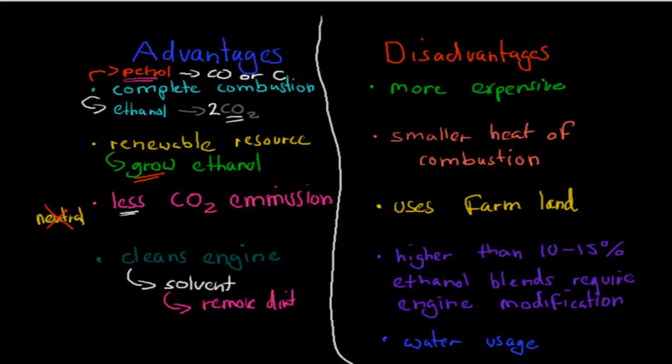But it also has some disadvantages as well. First of all, it's more expensive, because with fossil fuels all we have to do is drill, and drilling isn't that expensive, compared to growing and transporting and fermenting and distilling. So at the moment it still costs a lot more to produce ethanol than it does petrol, so ethanol itself is more expensive, which is a disadvantage. It has a smaller heat of combustion, which means that for the same amount it produces less energy, or for the same amount we can travel smaller distances.